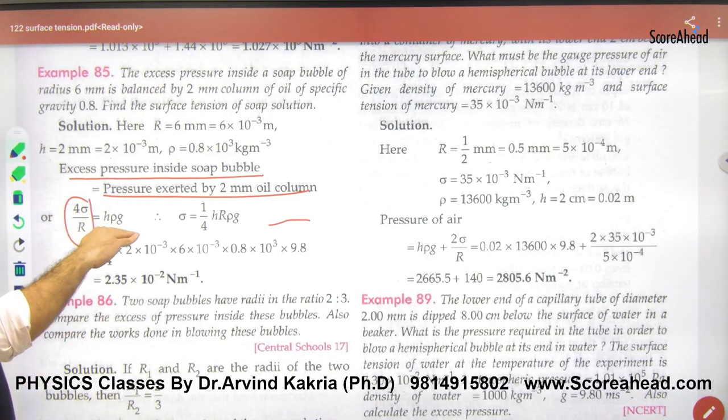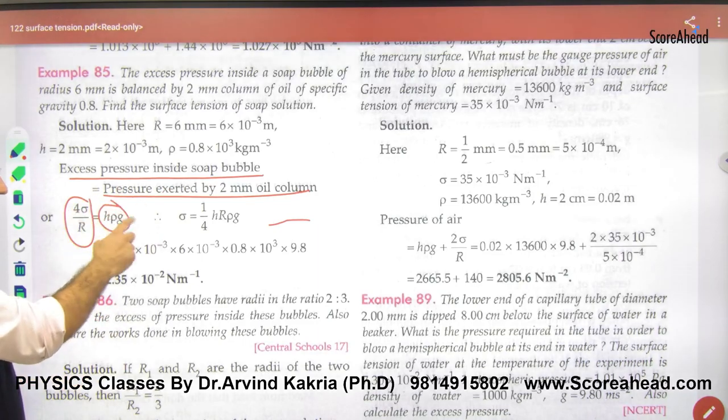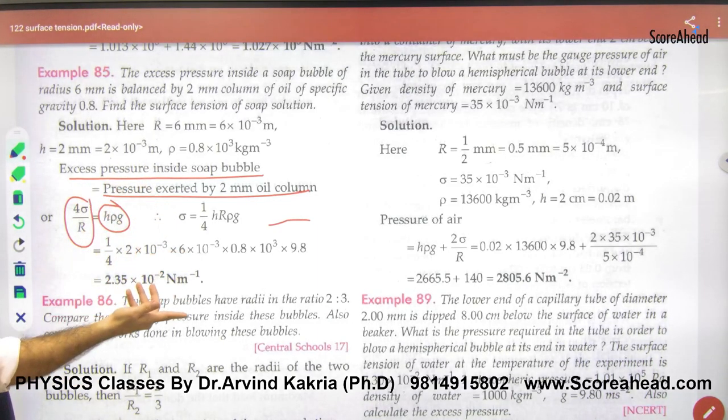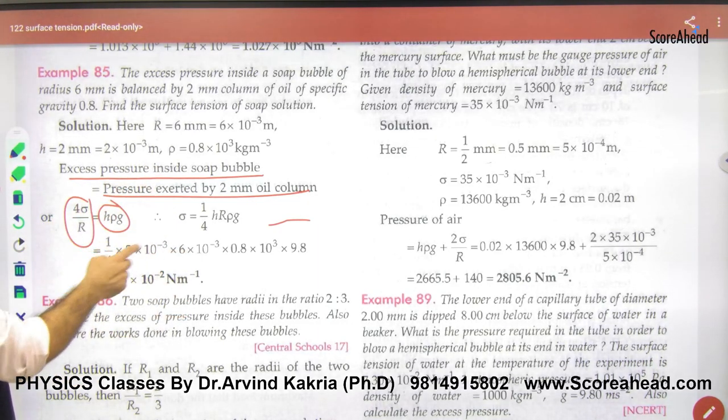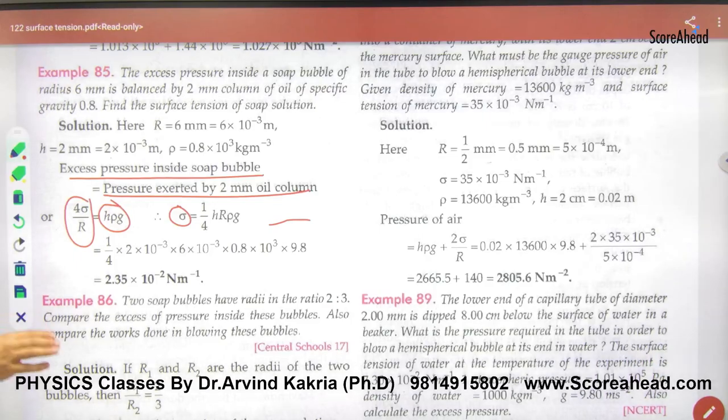And what is pressure exerted by 2 mm of oil column? h·ρ·g, where h, we know ρ, density of oil into g. Solve it here. What will we get out of here? Sigma. Sigma's value will come. So the point is coming: how do excess pressure balance the excess pressure? Just like it did, just balance it.